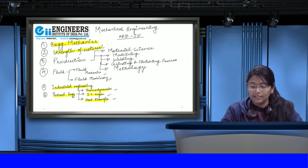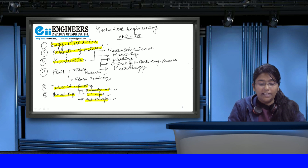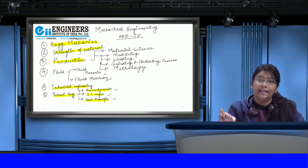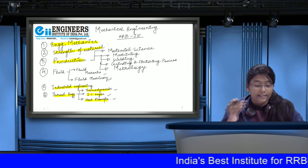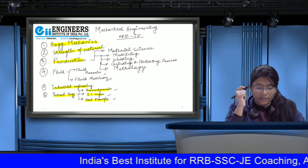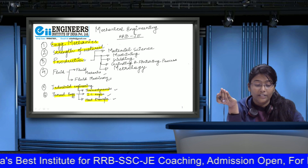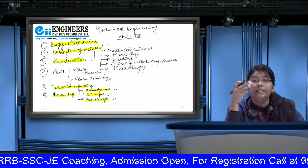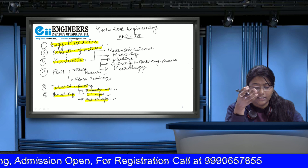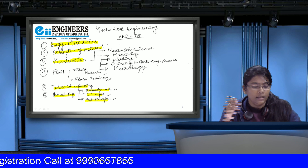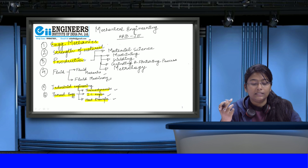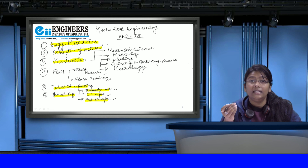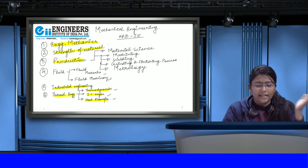Now the production part is very elaborated. In material science, we have to learn mechanical properties of engineering materials — strength, compressive strength, ductility, malleability, hardness, toughness, impact, fatigue, and creep. After that, classification of steels: mild steels and alloy steels. Then heat treatment processes: annealing, normalizing, hardening, tempering, quenching, carburizing, nitriding, and cyaniding.